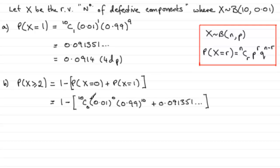Now if you work this out, 10C0 is 1, anything to the power 0 here is 1, so it's really just simply 0.99 to the power 10.